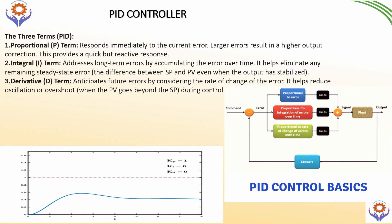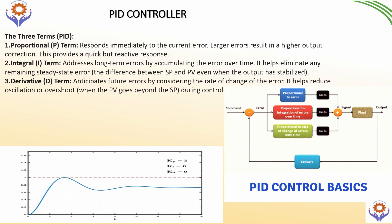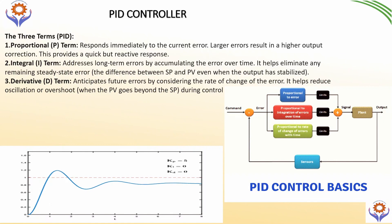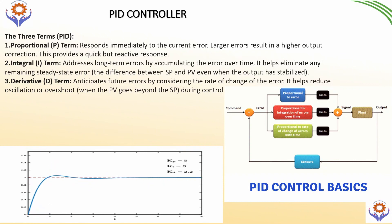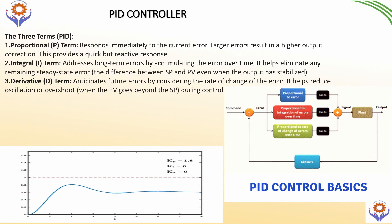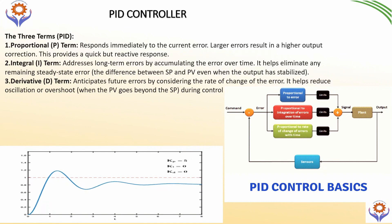Now we will see the terms of PID controller. What is Proportional? Proportional responds immediately to the current error — a larger error results in a higher output correction. This provides a quick but reactive response. For the Integral term, it addresses long-term error by accumulating the error over time.